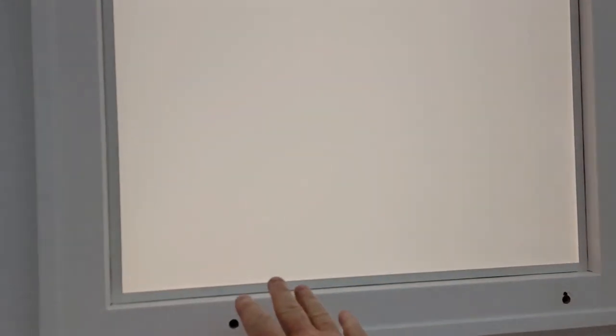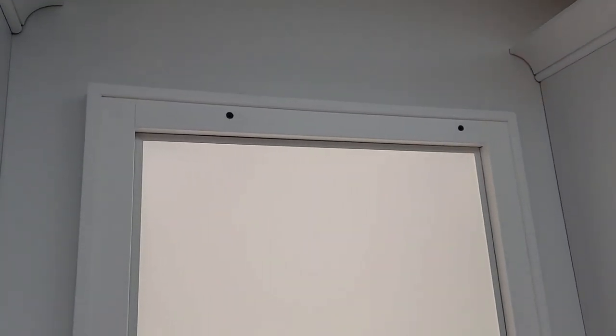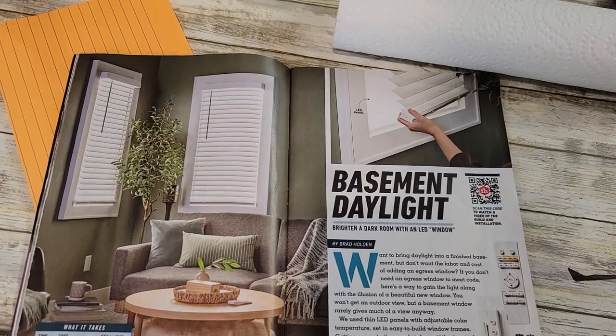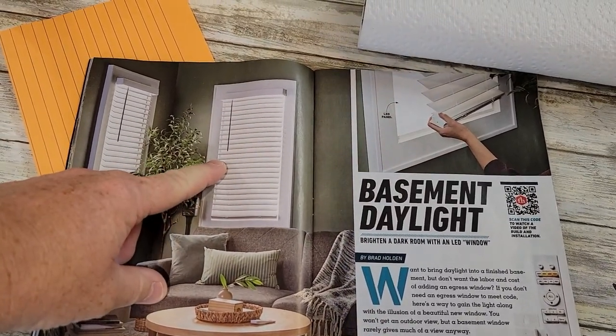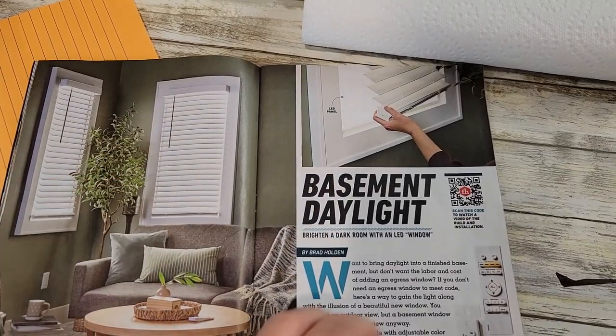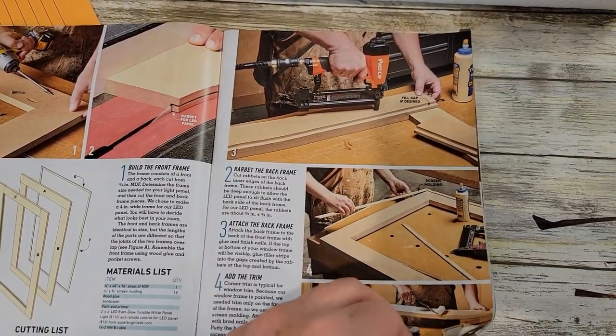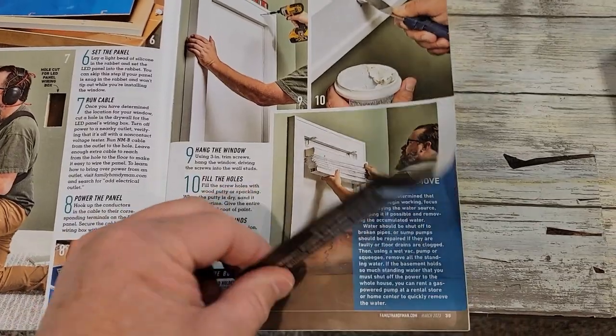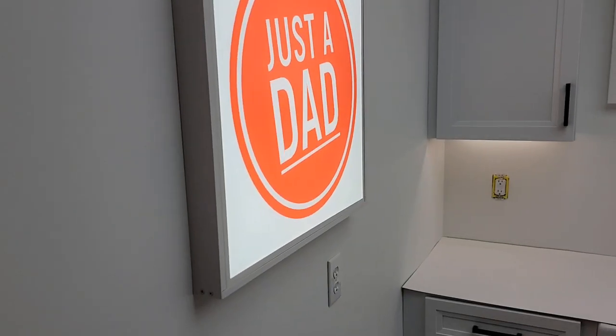So getting back to this window frame. This is a 2x2. I had to build this from scratch. There was a Family Handyman article and I followed it step by step. Yeah, it was in this issue here. They called it basement daylight. So they used the 2x4. That's like the bigger panels I got in the ceiling. I didn't use that. But you got to make this from scratch. It was a little tricky. But I thought it turned out okay. And all I got to do is I got the blinds on order. So I'll be putting the blinds on it.